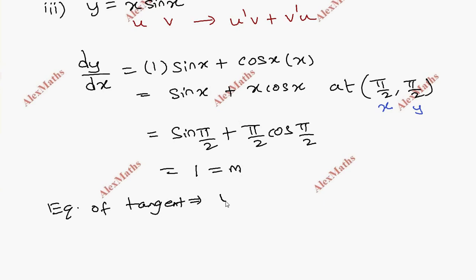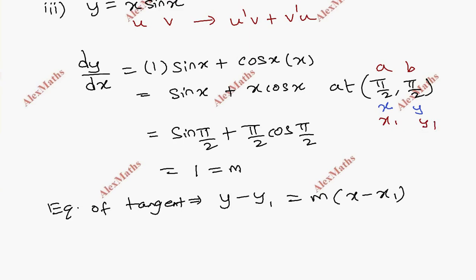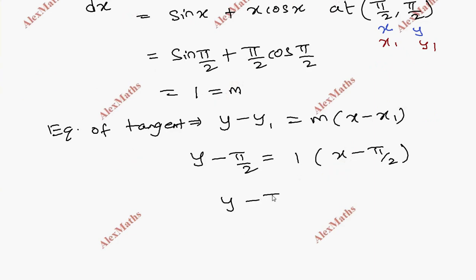Equation of tangent: y minus y1 equal to m into x minus x1. Here the point is (π/2, π/2), so a = π/2 and b = π/2. Substituting: y minus π/2 equal to 1 into x minus π/2. So y minus π/2 equals x minus π/2. The minus π/2 cancels, giving y equals x.